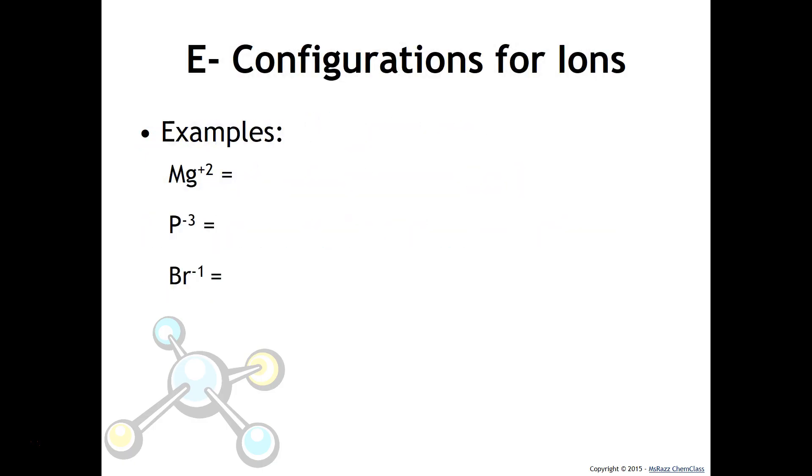One thing that's important to do is to remember how to write electron configurations for ions. For example, if you were to write the electron configuration for magnesium with a 2+ charge, you would have to indicate that two electrons were lost, and when that happens, it has the same electron configuration as neon. We would say that it is then isoelectronic with neon.